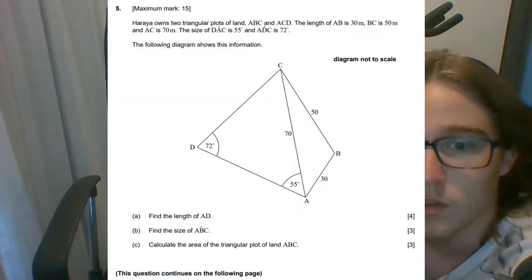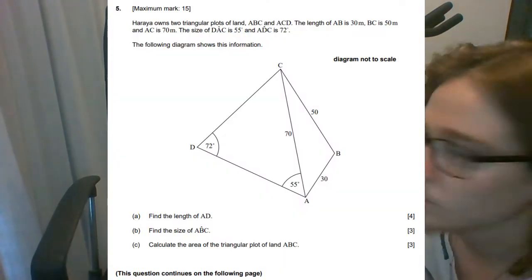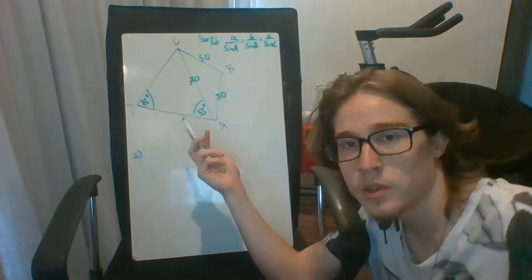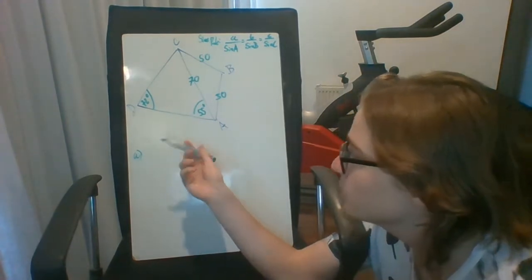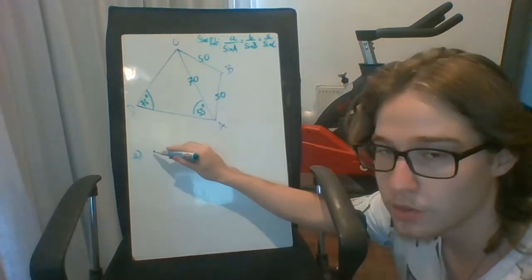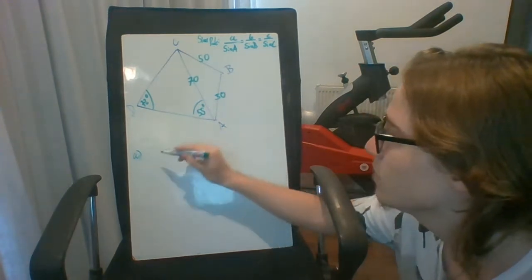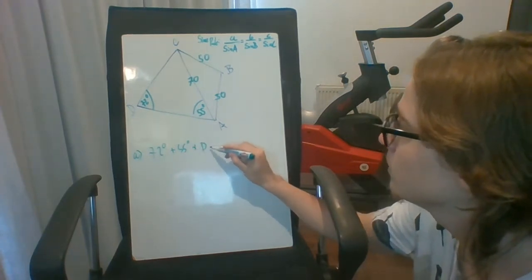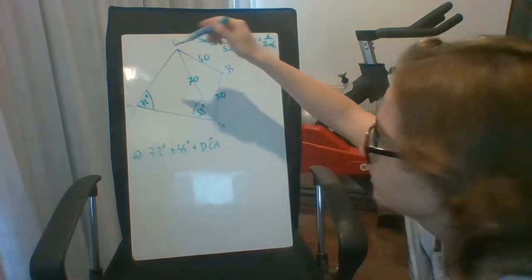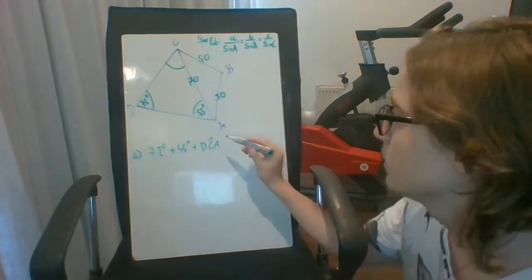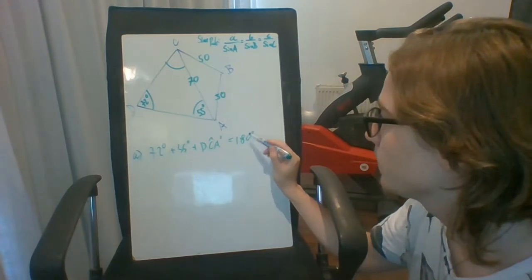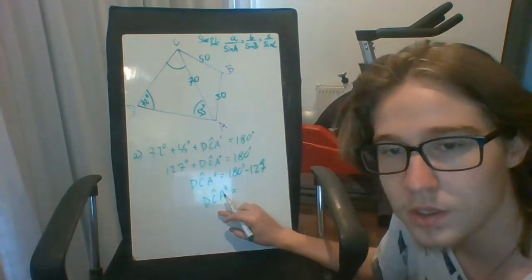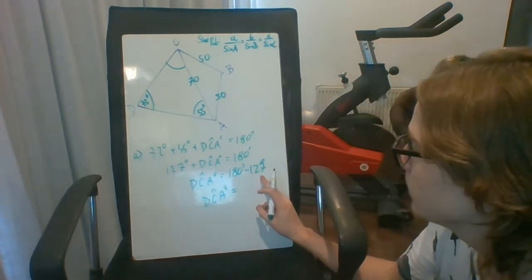Part A asks us to find the length of AD. First things first, with the information that we have, we want to see if we can get anything else out of it. Since we know that the number of degrees in a triangle is 180, that means that 72 degrees plus 55 degrees plus the angle DCA, which is the one right here, has to equal 180 degrees. Doing a little bit of math, we end up with angle DCA being 53.